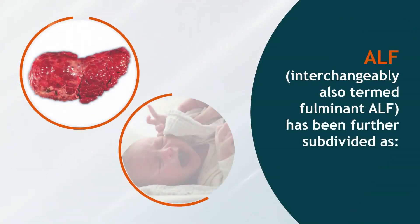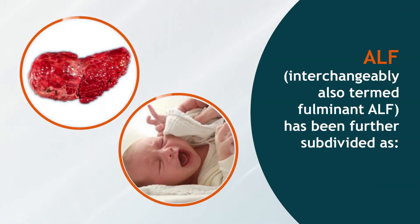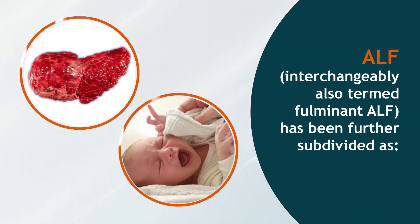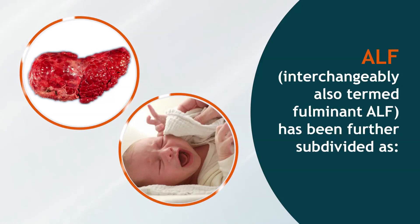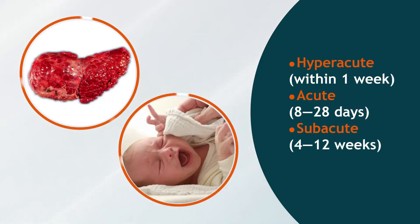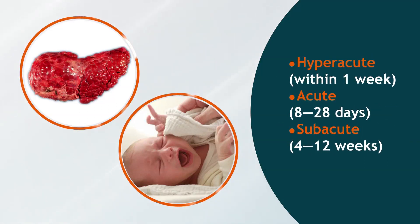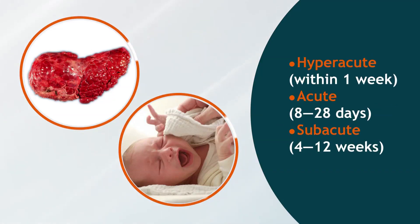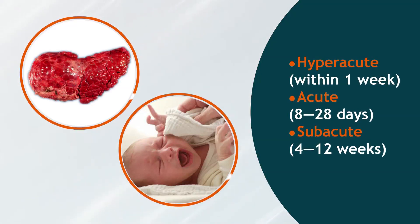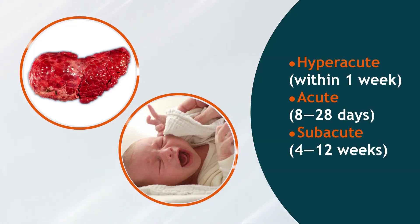ALF, interchangeably also termed fulminant ALF, has been further subdivided as hyperacute (within 1 week), acute (8–28 days), and subacute (4–12 weeks).